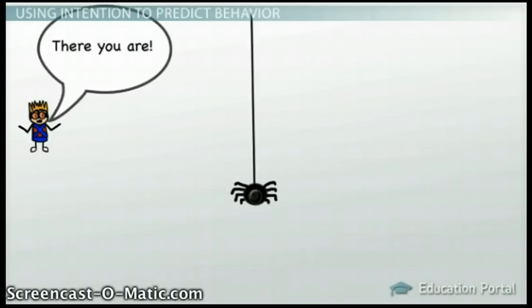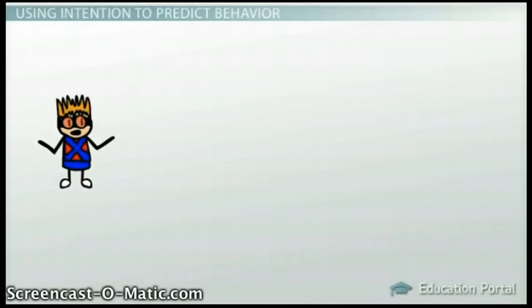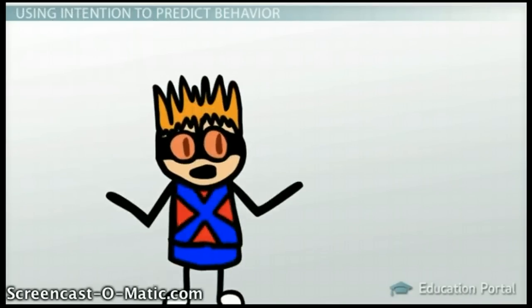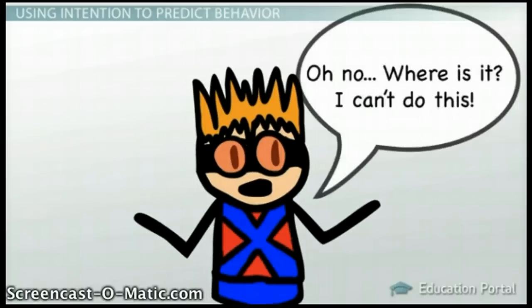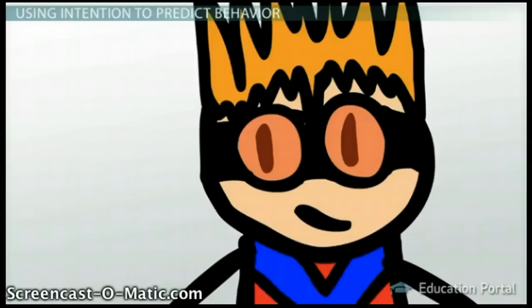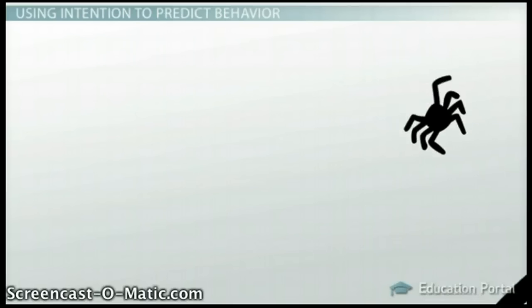This may seem obvious. After all, if you intend to do something, you'll definitely do it, right? Well, not necessarily. Intention doesn't always accurately predict behavior when there is a reflex or conditioned response involved. For example, someone with a phobia may intend to stay calm and collected when faced with their fear, but may end up having a panic attack instead.